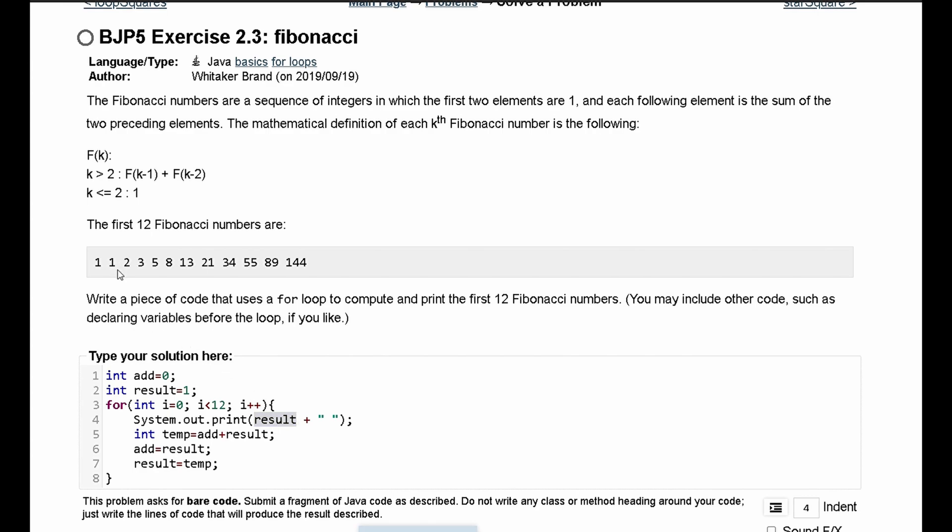Now we need to print out two. So we're going to have int temp equals add plus result. Add is one and result is one, so we're going to get two here. Then add is equal to result, result is one, so add is equal to one, and result is equal to temp, temp being equal to two. We add these two together and then we are going to get three as our next result.